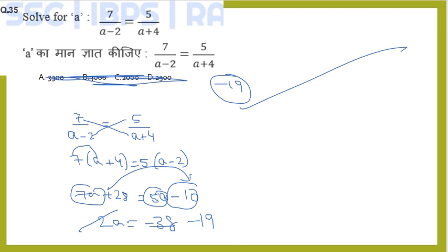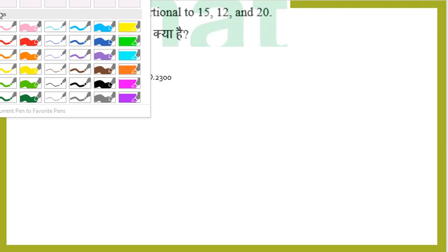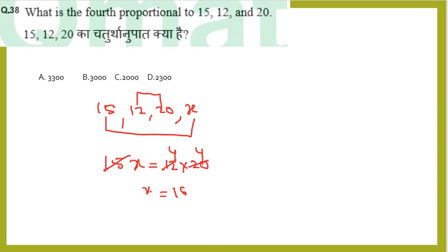Question 38: What is the fourth proportional to 15, 12, and 20? For fourth proportional, we set up 15, 12, 20, x. The product of extremes equals the product of means. So 15 times x equals 12 times 20. Simplifying: 15x equals 240. Dividing both sides: x equals 16. The fourth proportional is 16.